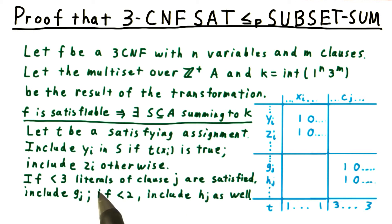As for the g and h families, if fewer than three literals of a clause are satisfied, then include g. If fewer than two, then include h as well. In total, the sum of these numbers must be equal to k.